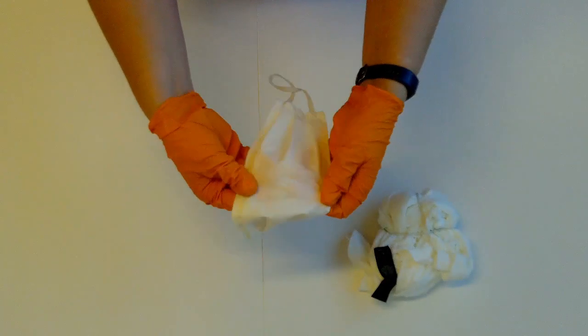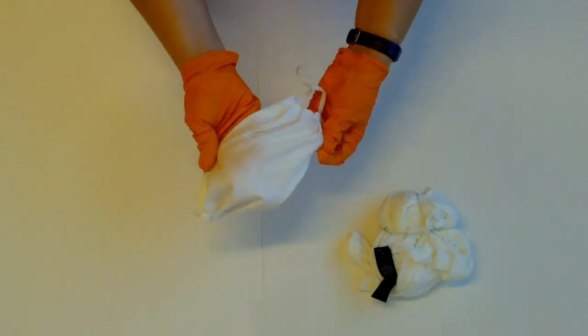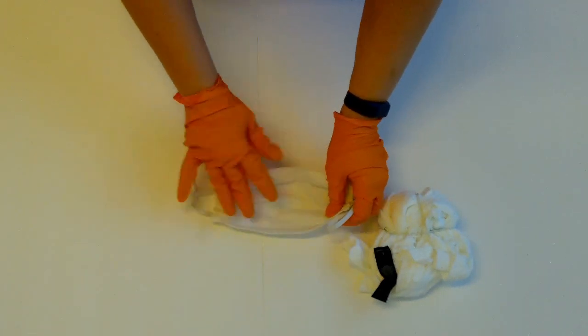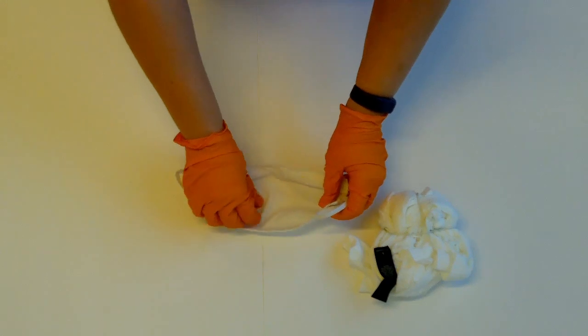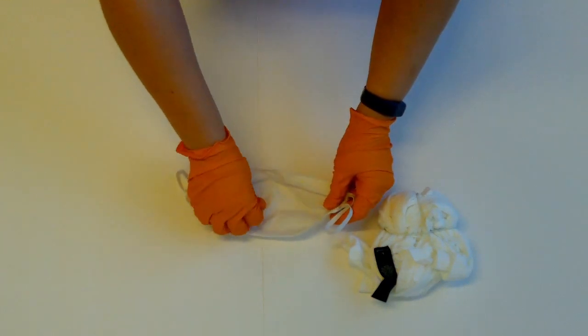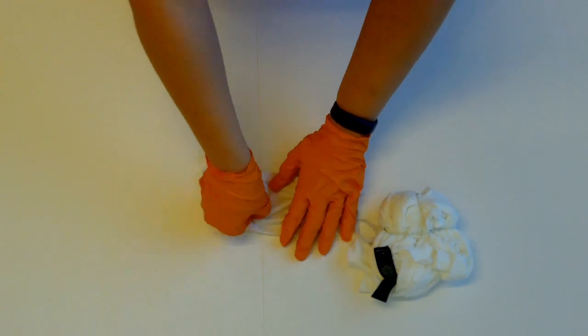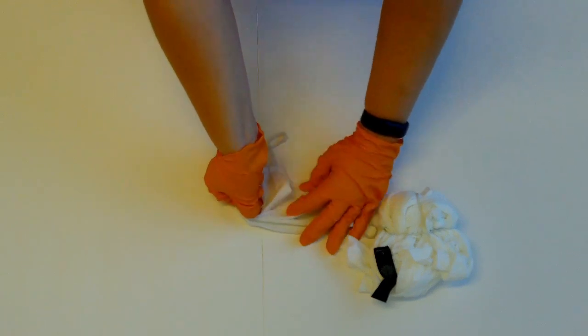For the mask, open the pleats and lay it down. Decide your center point, in the center or off to the side. Pinch and twist just like the shirt and secure with rubber bands.